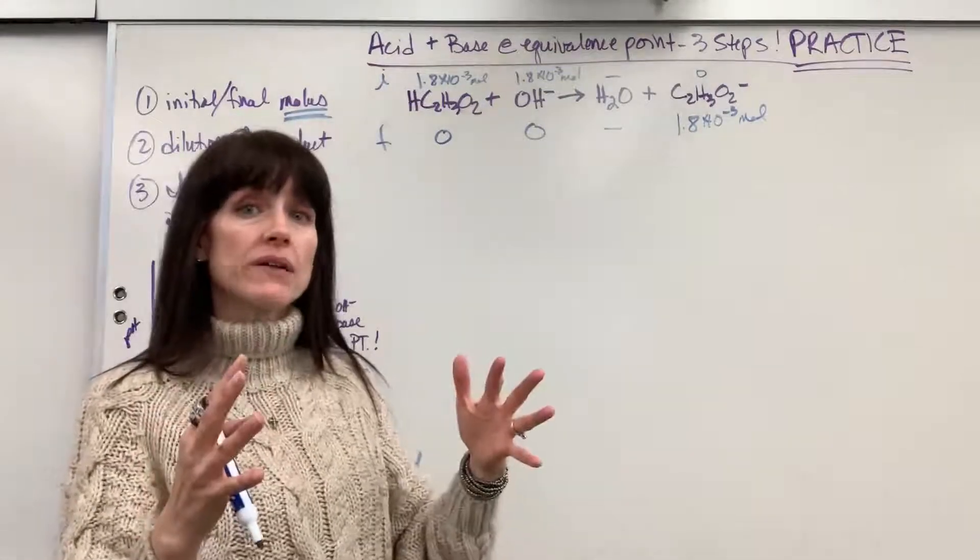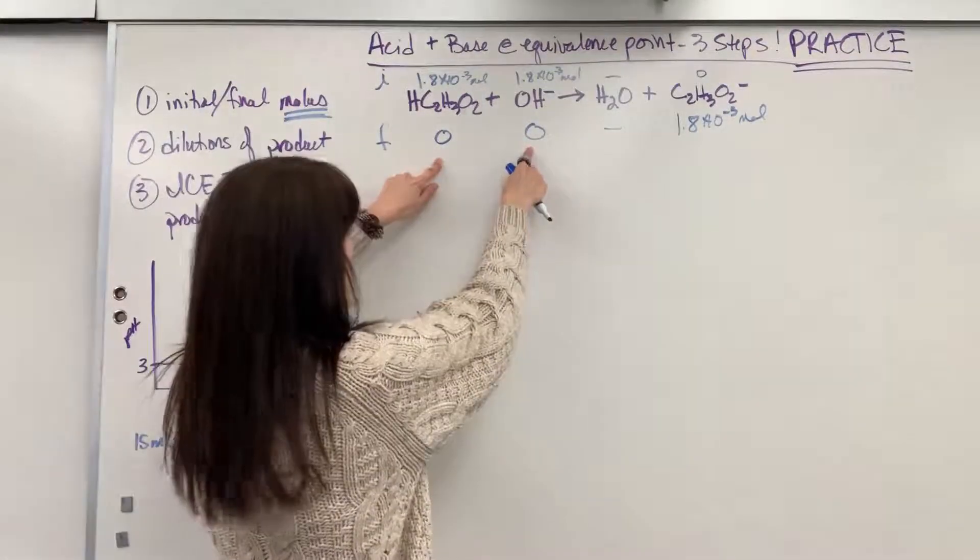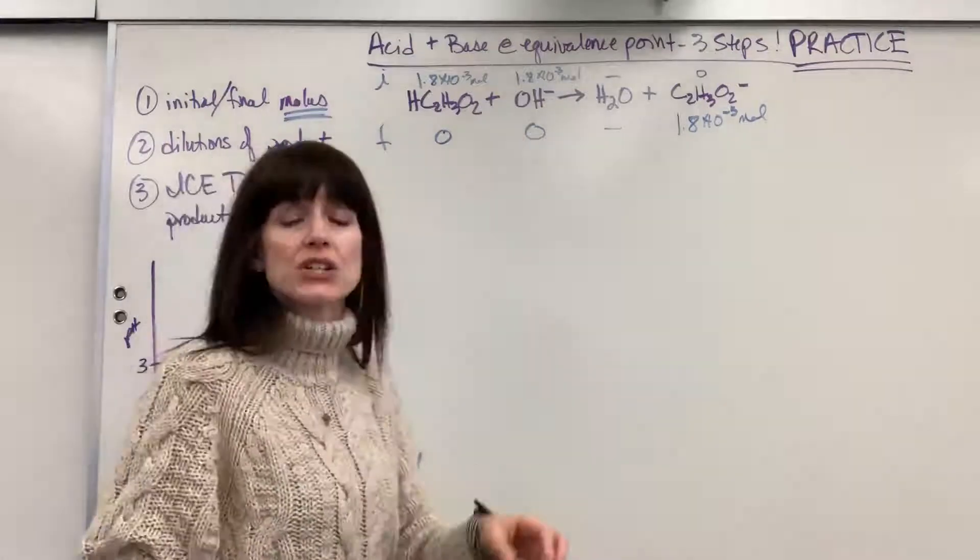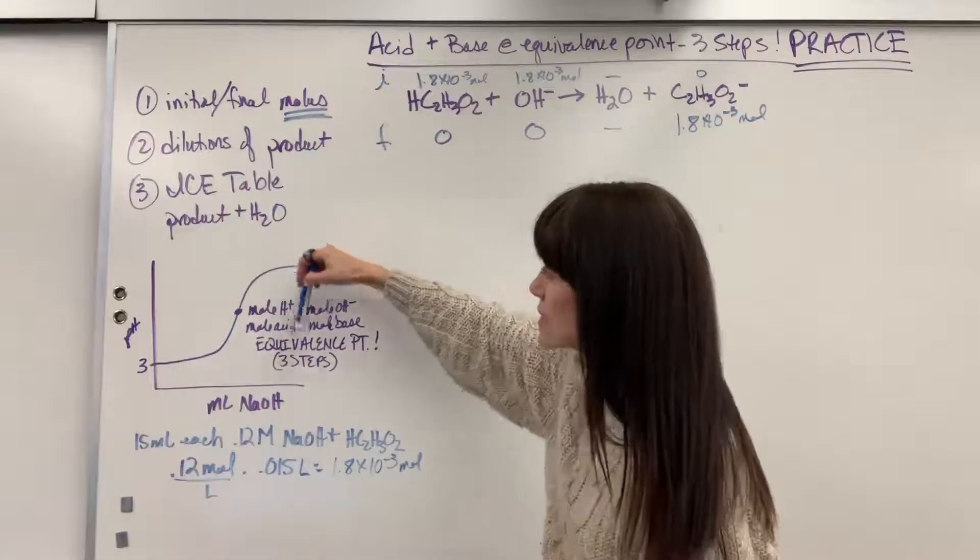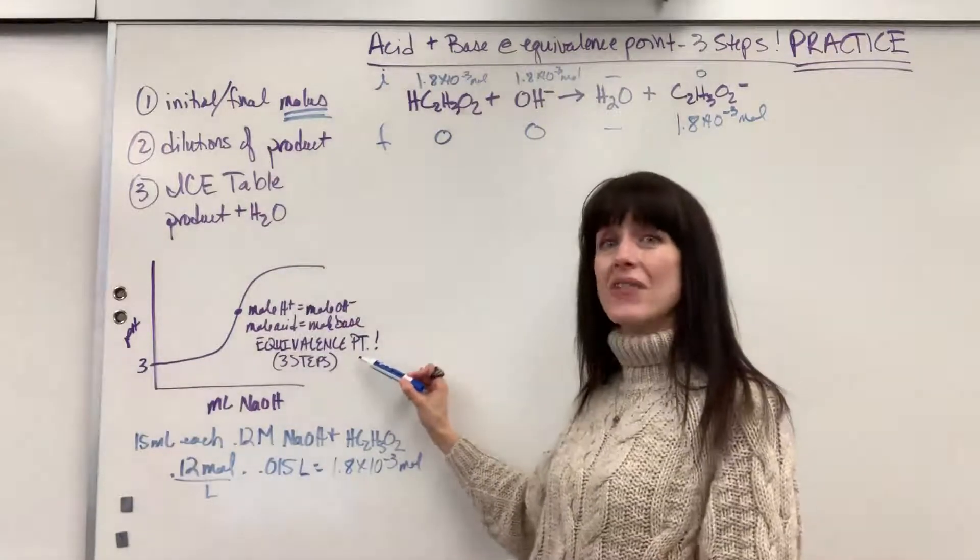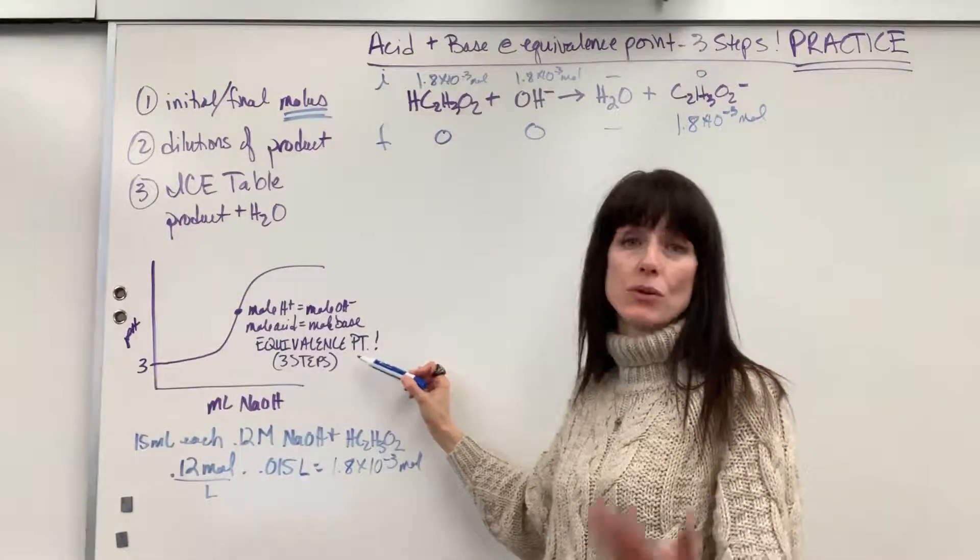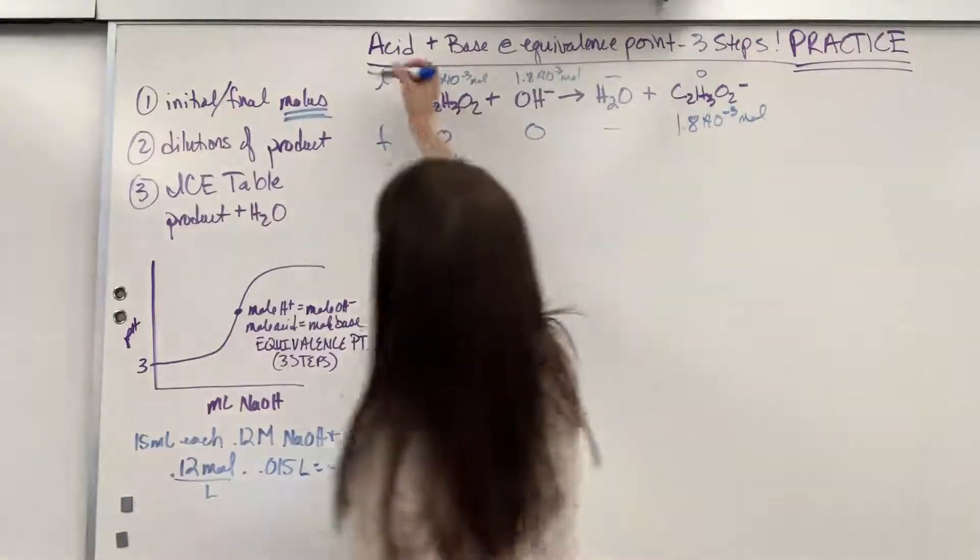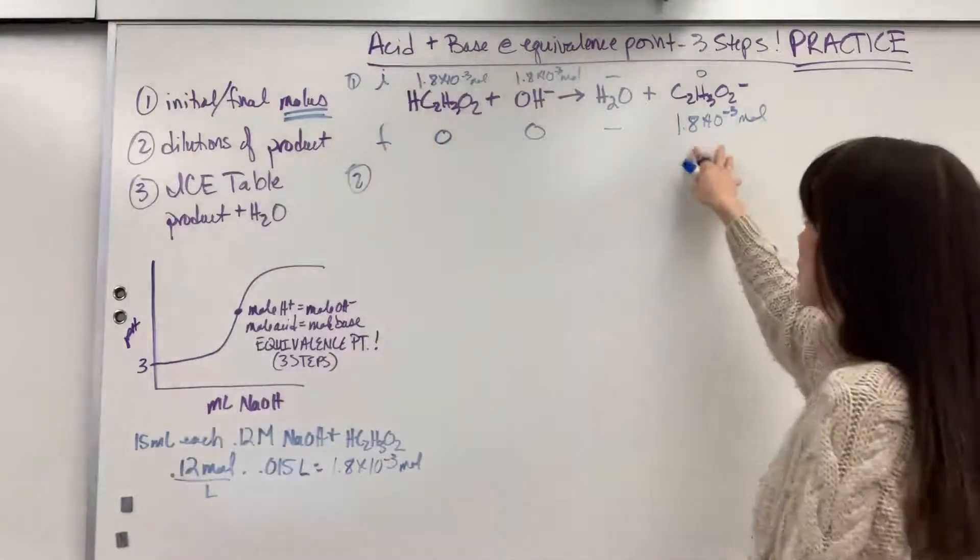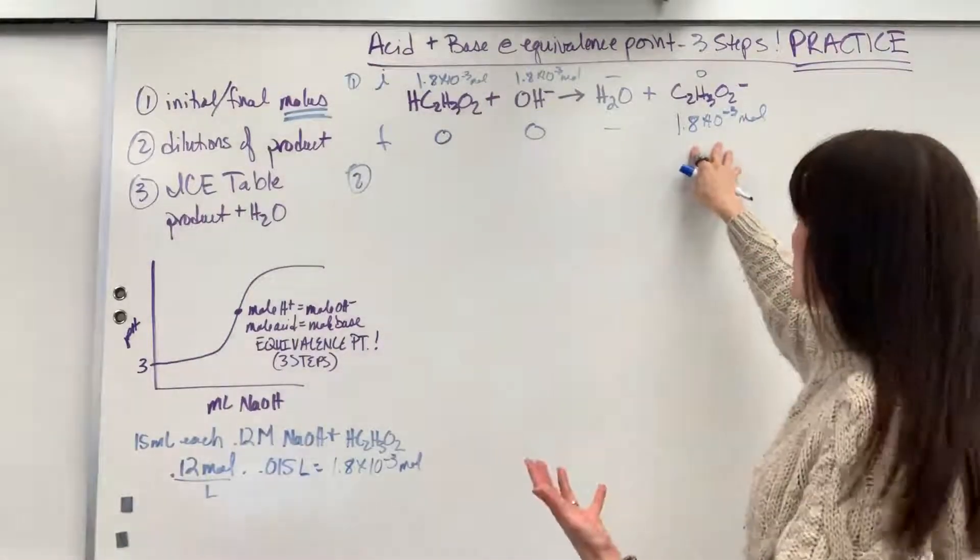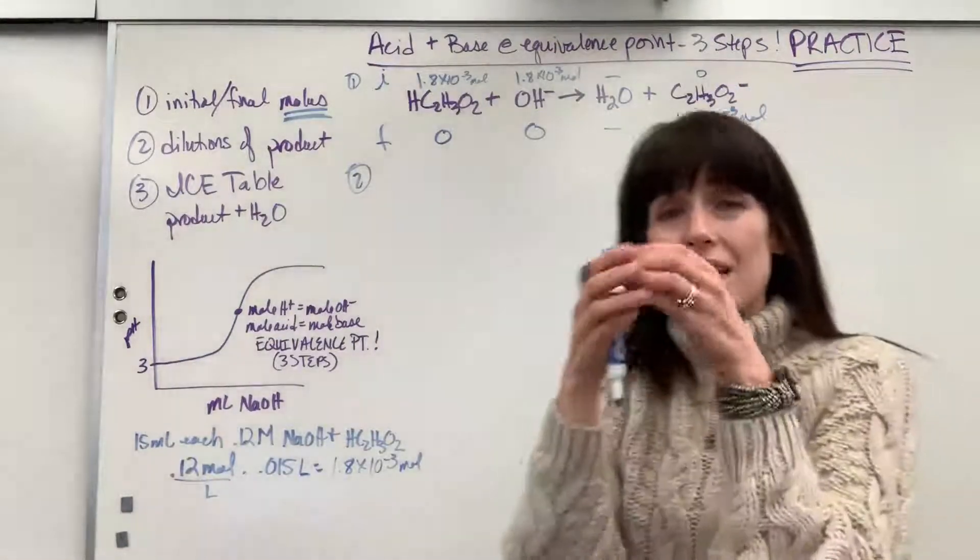So here's my clue. I have to do the three steps. Those zeros, because at the final concentration, I have no reactants left over, it means we had the exact moles of acid and base. I'm at the equivalence point. So we're going to have to do three steps. I've already done step one. So now let's do step two.